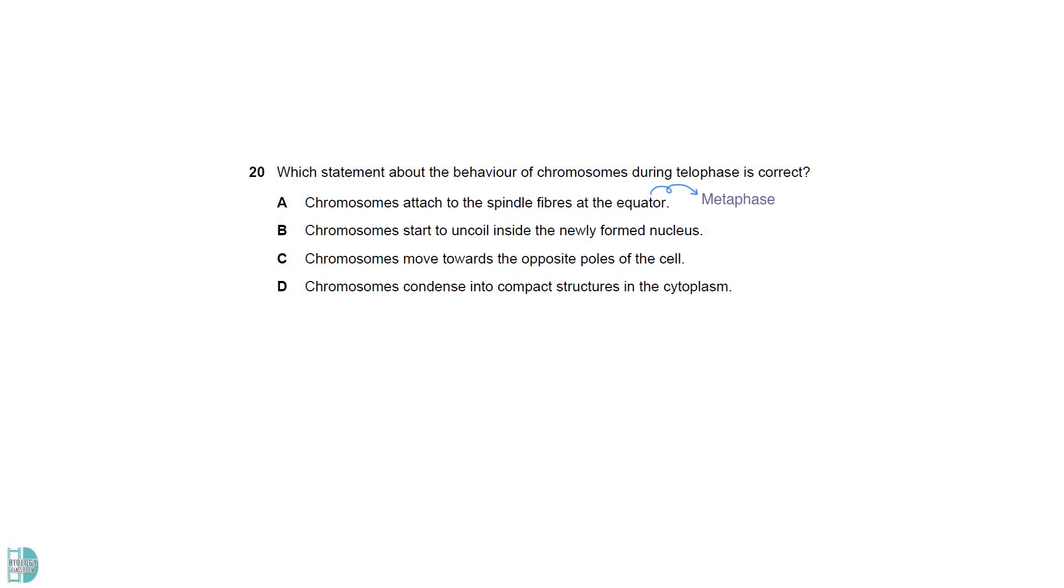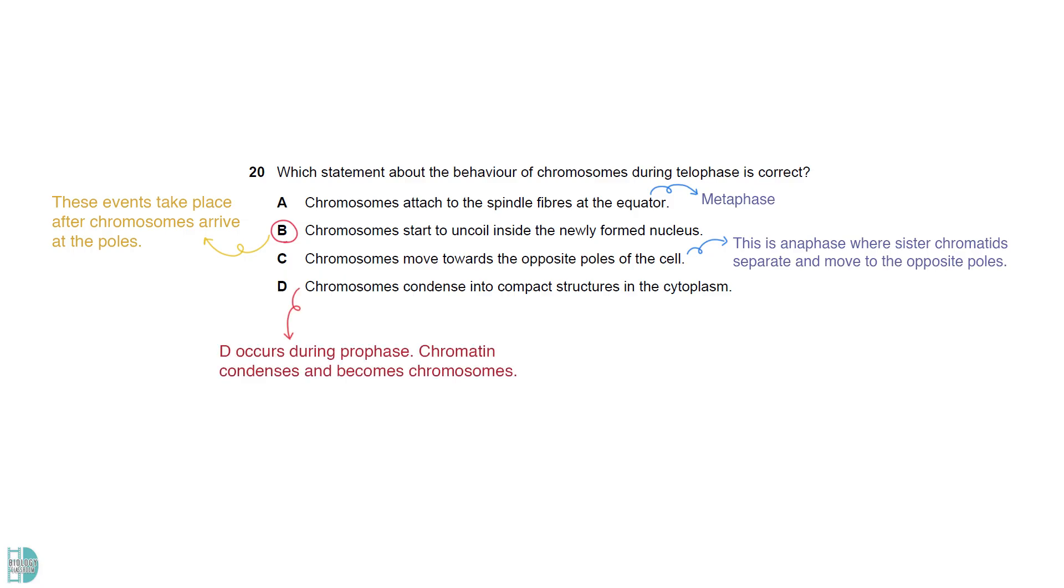A is the description of metaphase. After arriving at the poles, chromosomes uncoil, and the nuclear envelope reforms. So, B is the correct description of telophase. C is about anaphase where sister chromatids separate and move to the opposite poles. D occurs during prophase. Chromatin condenses and becomes chromosomes.